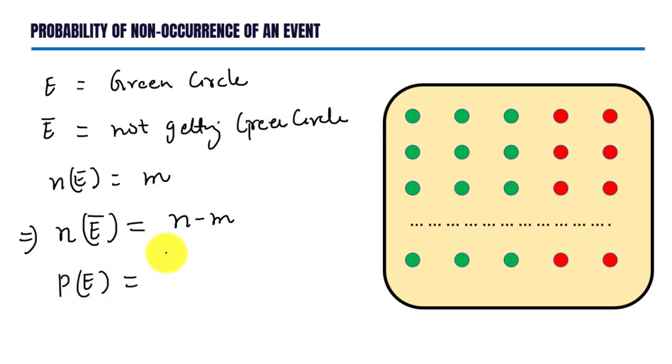...equals n(E) upon n(S), where S denotes sample space. n(E) equals m and number of elements in sample space equals n. Further, probability of non-occurrence of...